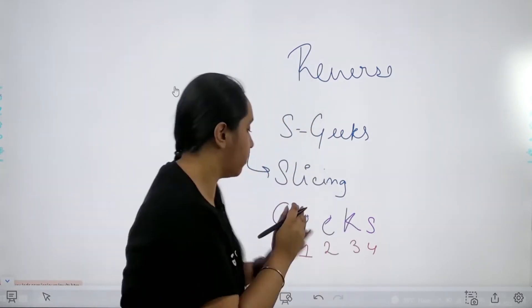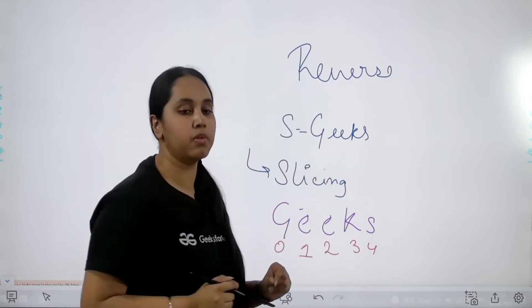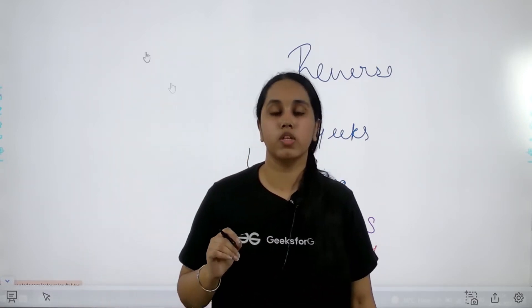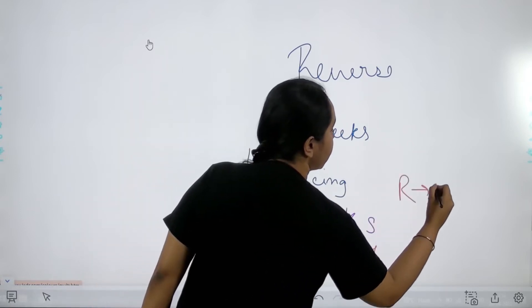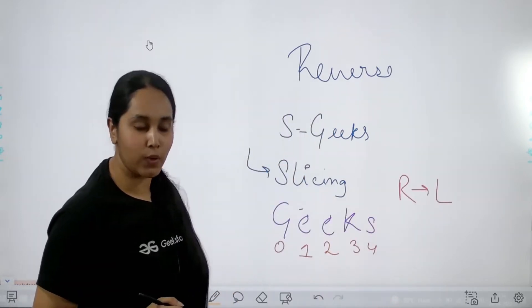But these index values are from this side to this side. That means they are from the left side to the right side. But there are index values from the right side to the left side as well.